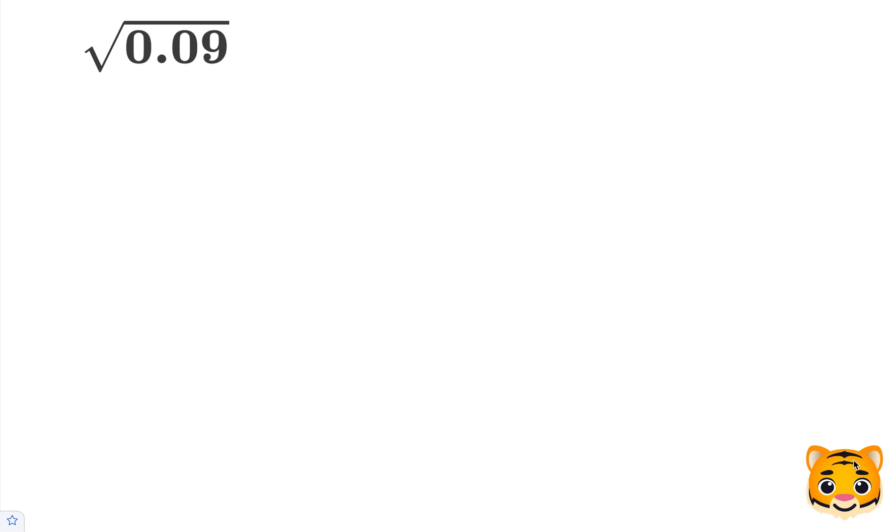In this example, we'll be evaluating the square root of 0.09. To do this, we first want to turn 0.09, which is a decimal, into a fraction.